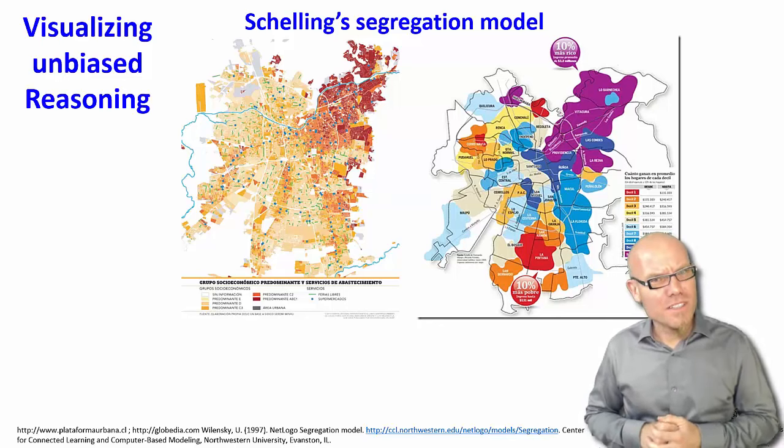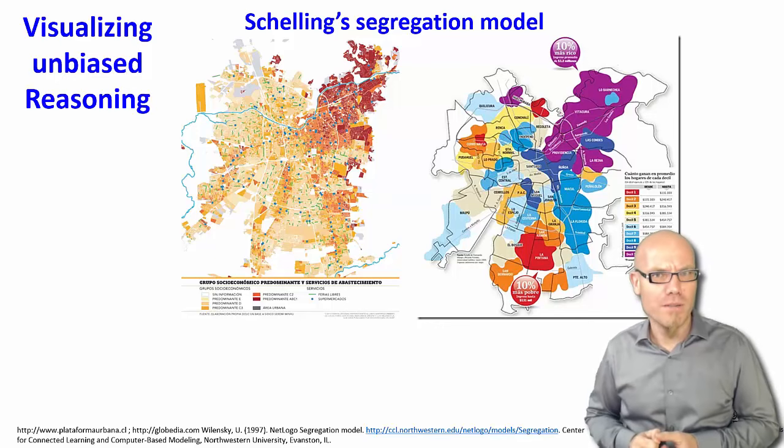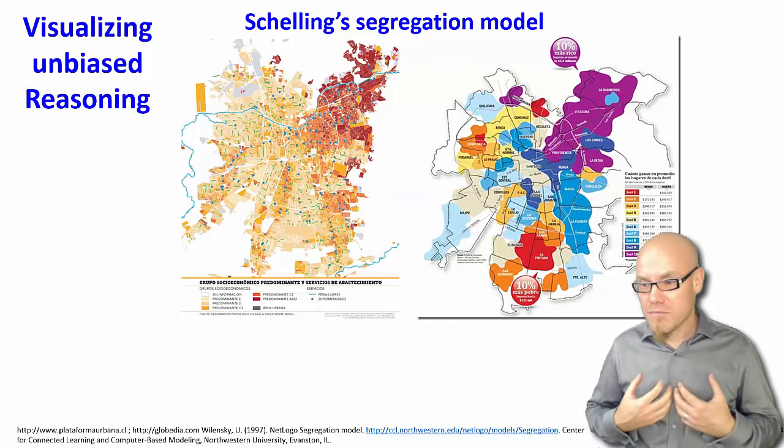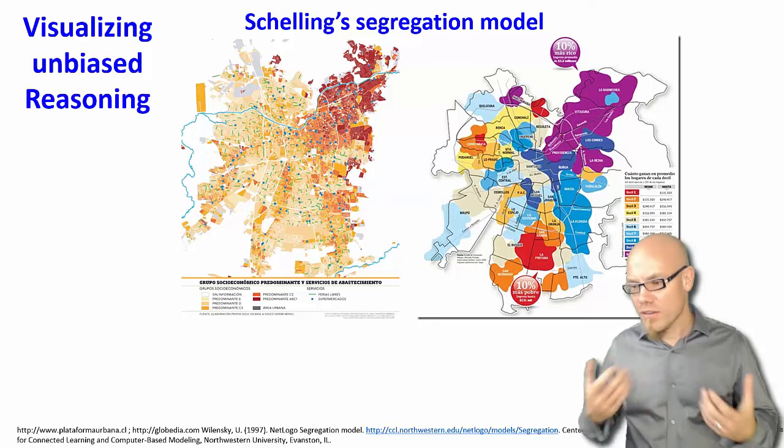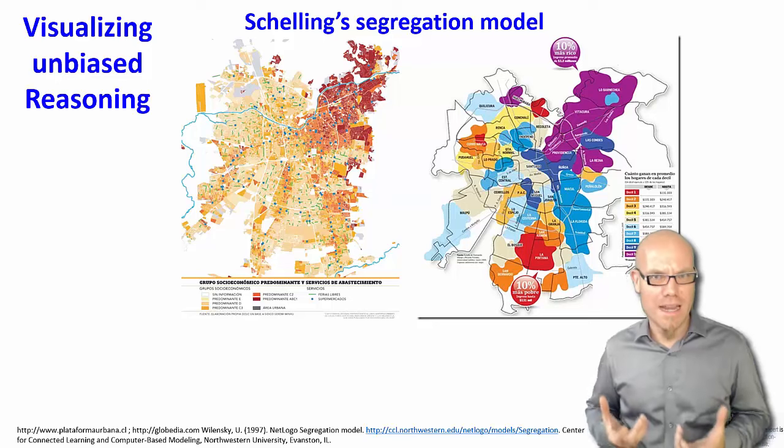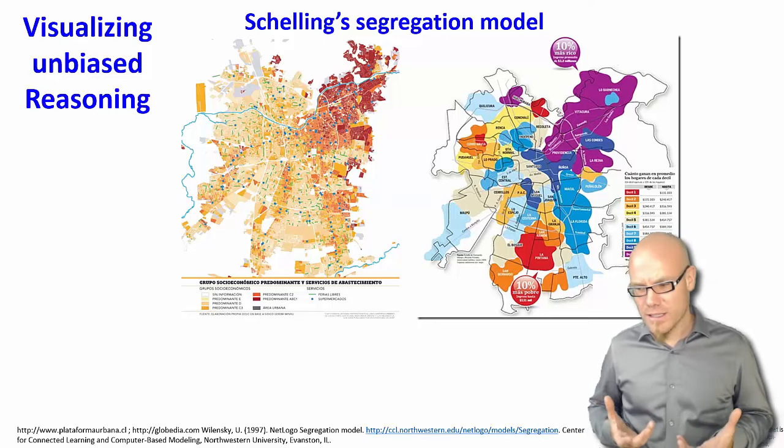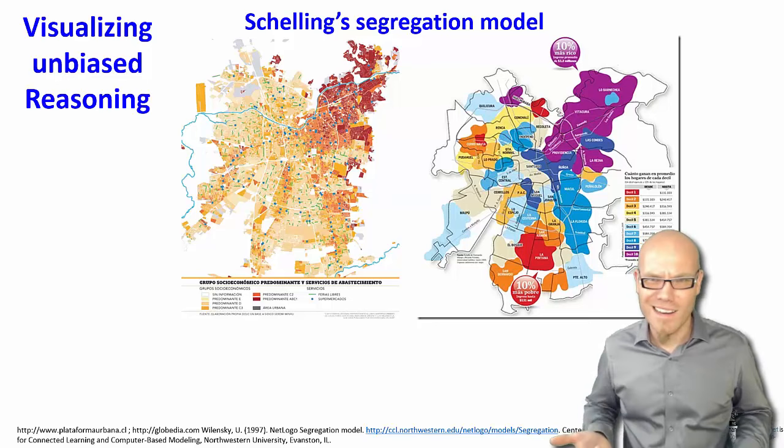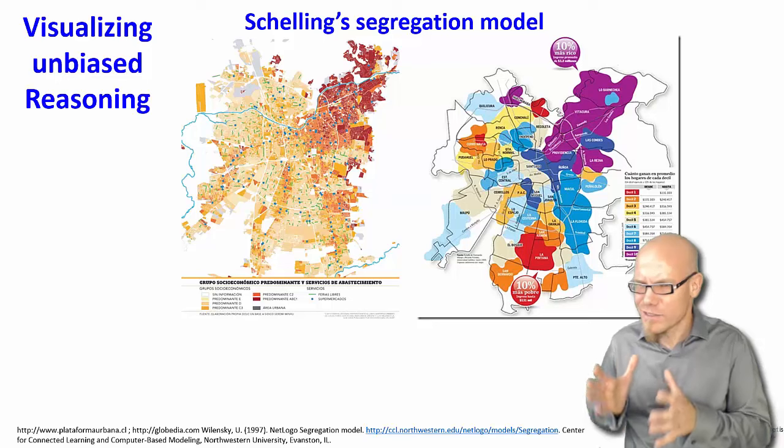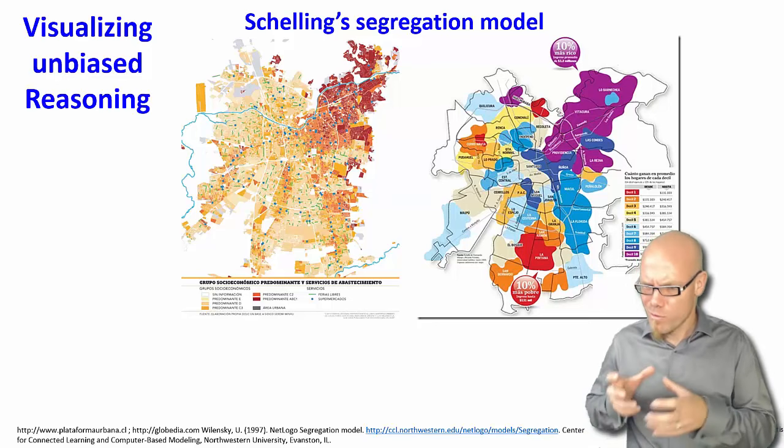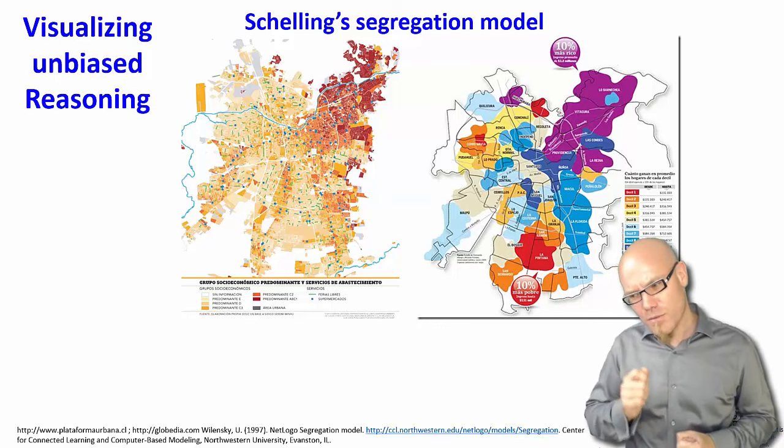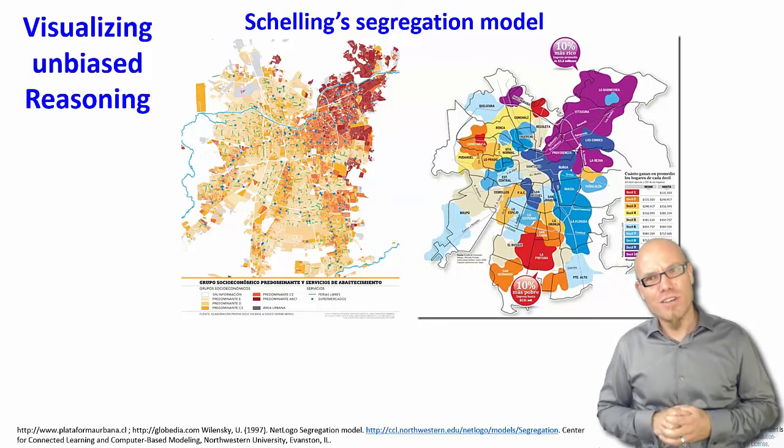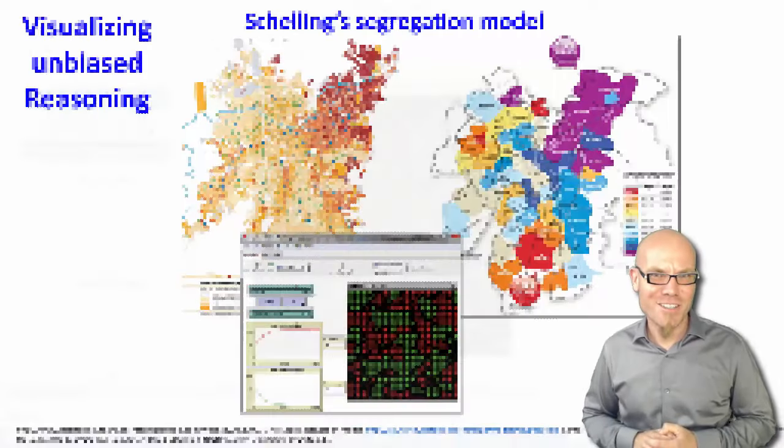The interesting thing that Professor Schelling observed is that once you ask people, they say, actually, I don't like living in a purely white neighborhood. I would love to have a more multicultural setting here in my neighborhood. There are two ways how you can explain these contradictions: either people are just liars, or there's a little bit more to it. Professor Schelling said, well, maybe there's more to it. So he invented this kind of model.